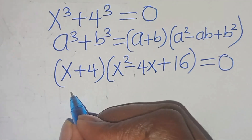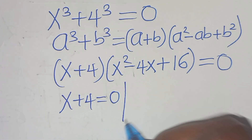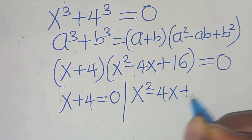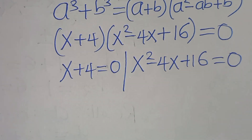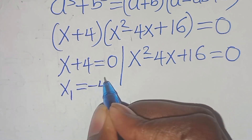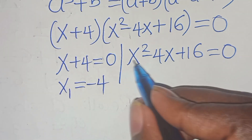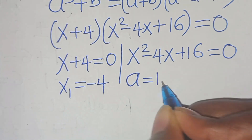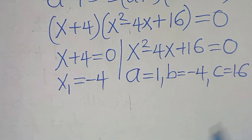We have two parts here. The first part is x plus 4 equals 0, giving x₁ equal to minus 4. The second part is x squared minus 4x plus 16 equals 0. From the quadratic equation, we have a equal to 1, b equal to minus 4, and c equal to 16.